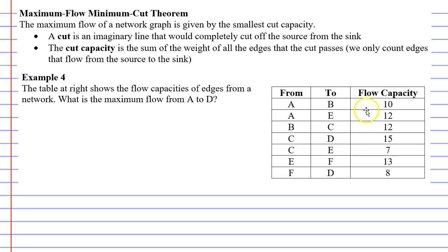So what we're doing here is we're taking a table and we've got to convert it into a network diagram. And then we're going to use the maximum flow minimum cut theorem to find the maximum flow.